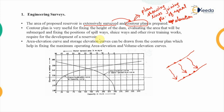The contour plan is very useful for fixing the height of the dam, evaluating the area that will be submerged, and fixing the position of spillways or sluiceways. A major concern is rehabilitating people living in the area that will be submerged, so we need to correctly evaluate the submerged area and plan river training works accordingly.